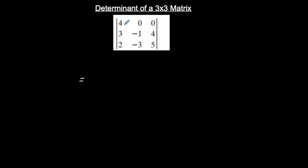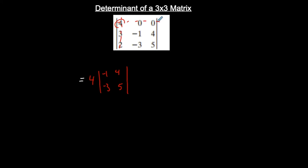Dealing with row one, we start with the first element, which is four. When we take that element, everything in its row and its column gets crossed out. Whatever is left forms the matrix whose determinant we calculate. This is called a cofactor matrix.